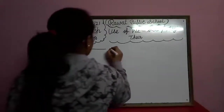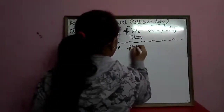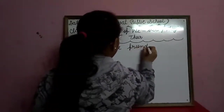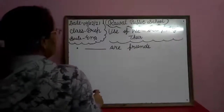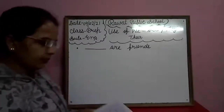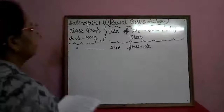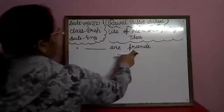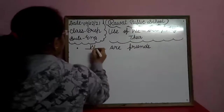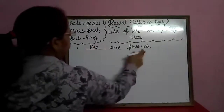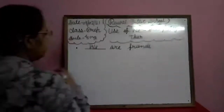Our friends. So, is mein aapke paas pictures bhi bani huyi hain — pictures bhi hain. Lengi apni workbook mein se. Our friends. So we will use of We. You will write here: We are friends. Hum friends hain.